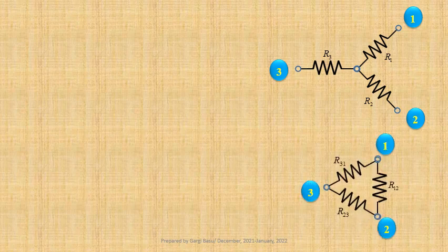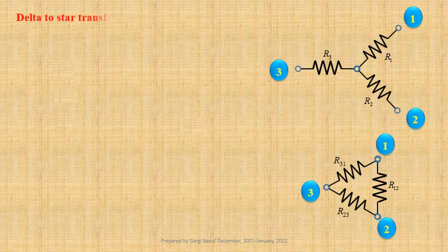Let us go through the guiding equations. Here three resistors R1, R2, R3 form a star, and three resistors R12, R23, R31 form a delta. These two systems will be equivalent when the resistance measured between any two terminals is the same in both systems with the third terminal open.